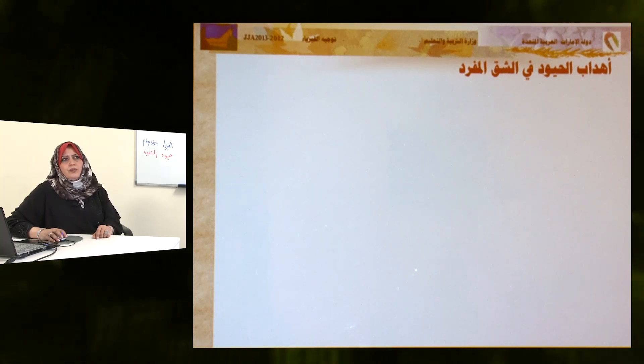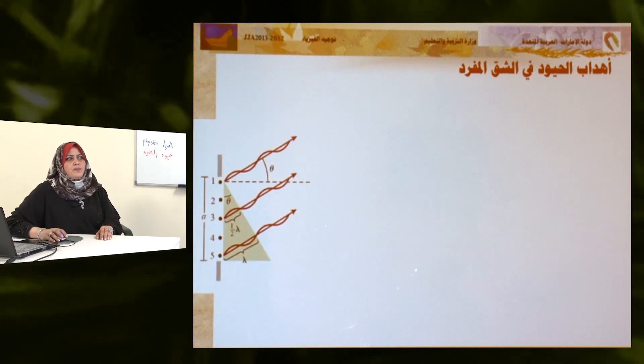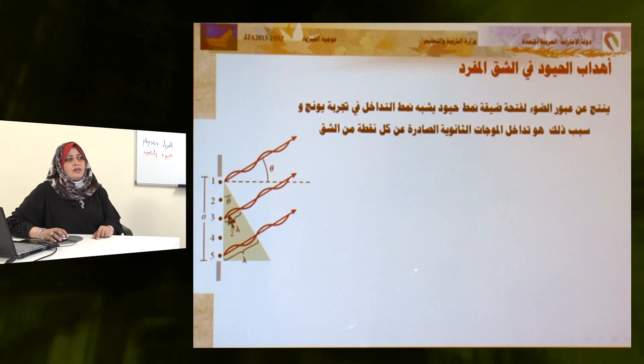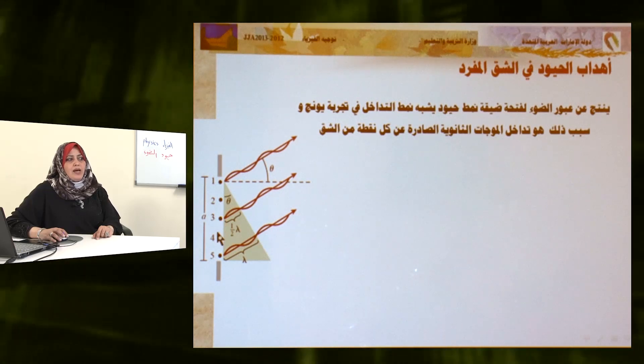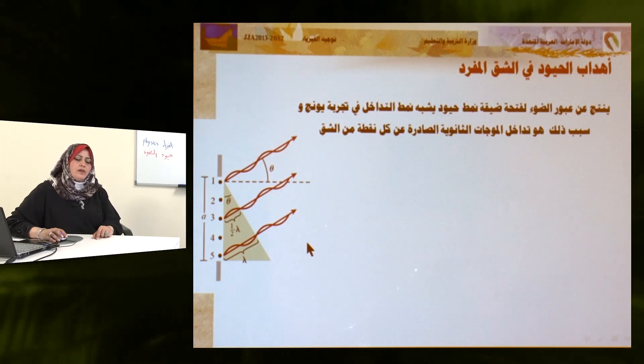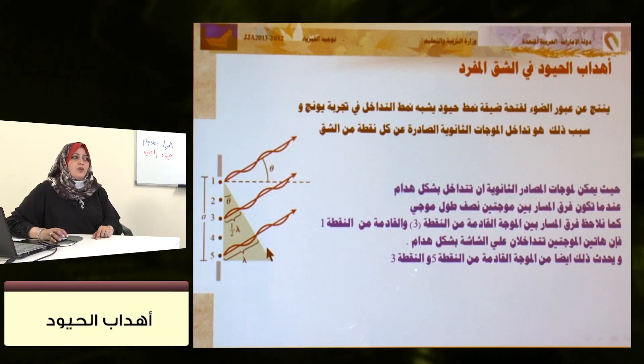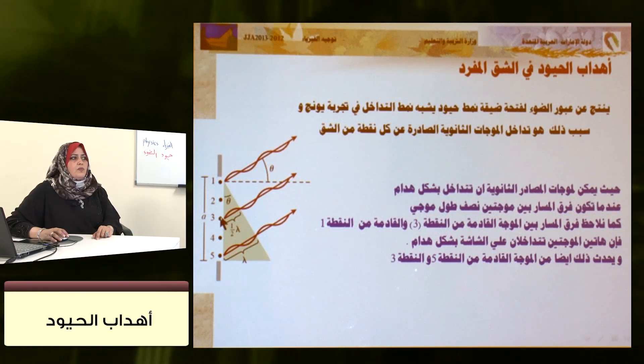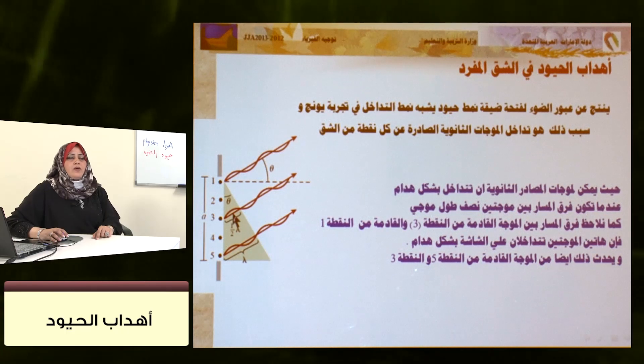الهدب المركزي المضيء يكون عندما تقطع جميع الموجات نفس المسافة. أما الأهداب الأخرى في الشق المفرد، فقد تكون مضيئة أو مظلمة. الذي يحدد الهدب المضيء والمظلم هو فرق المسار: إذا تداخلت موجتان بفرق مسار يساوي نصف الطول الموجي يسبب تداخلاً هداماً وهدباً مظلماً. وشدة الضوء على الشاشة تعتمد على زاوية انحراف الضوء.